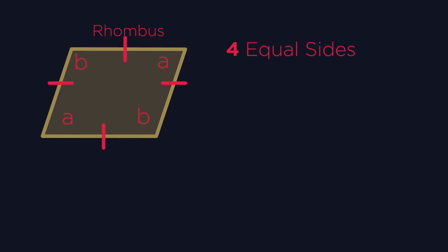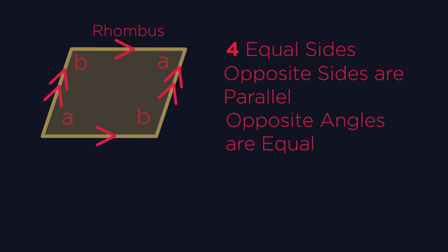Four equal sides. Opposite sides are parallel and equal in length. Opposite angles are equal. I always think of a rhombus as a tipped over square. Did you know that a square is a type of rhombus?